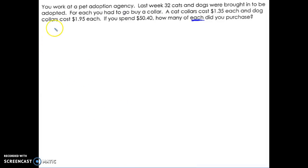So it wants to know how many of each of these collars we purchased. So that means I'm going to have two variables: one to represent cat collar and I'll use D to represent dog collar.